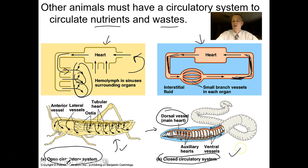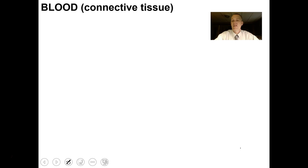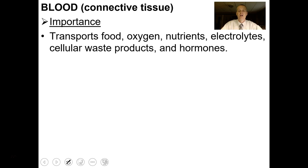You're a mammal, you're a vertebrate, and you have a closed circulatory system. Blood is a connective tissue by definition, and it's very important. It transports all kinds of substances in creatures that have a closed circulatory system — food, oxygen, nutrients, electrolytes, which are dissolved ions.